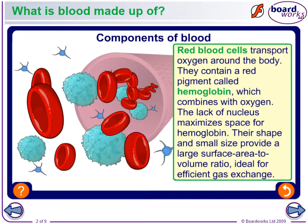For example, a solid cube of sugar has a larger surface area to volume ratio because it's packed tight, so it will take a long time to break down. With red blood cells, because there's no nucleus, they're maximizing every bit of space they have.